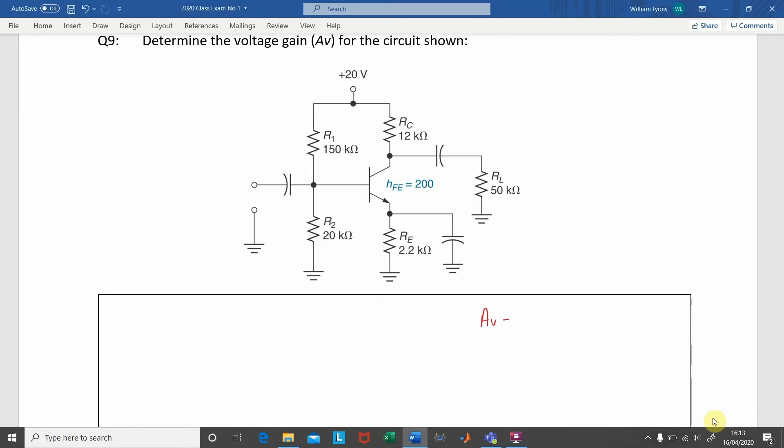The voltage gain we know we can get using the formula RC over R'E, which is the AC collector resistance divided by the AC emitter resistance.